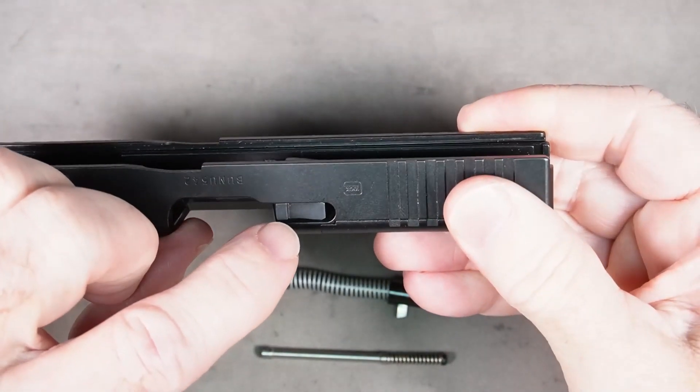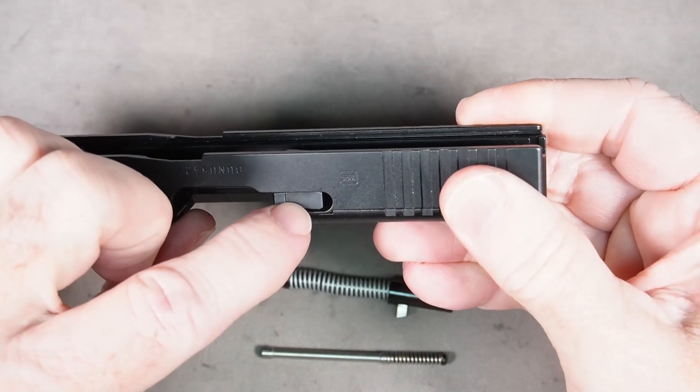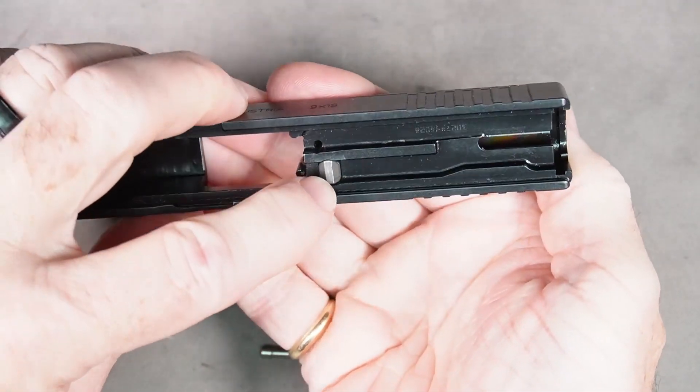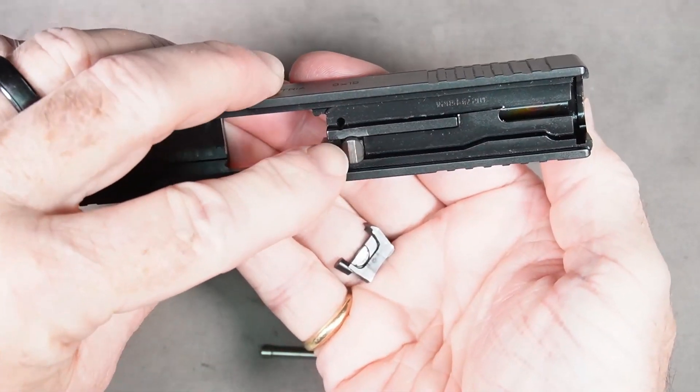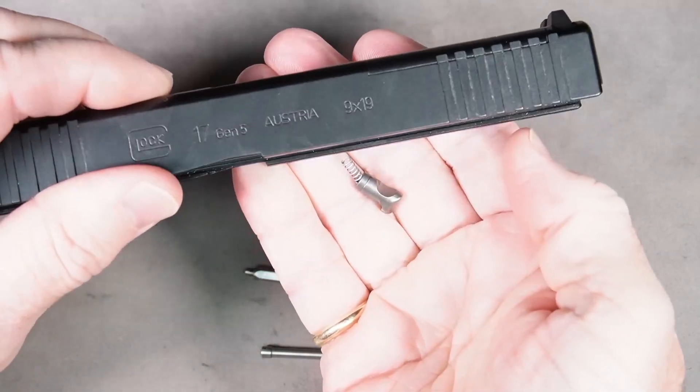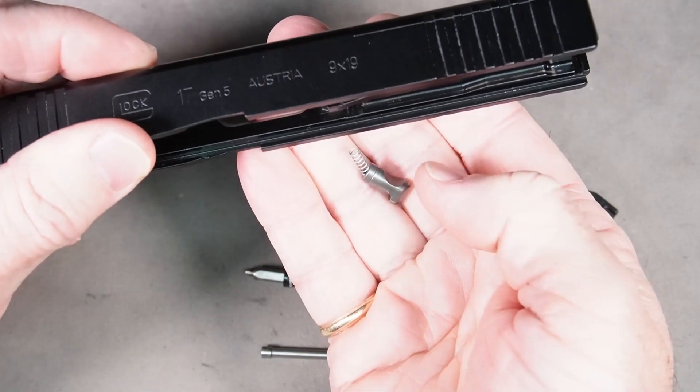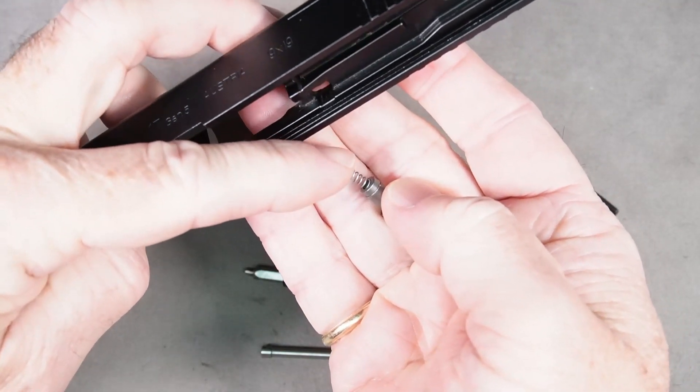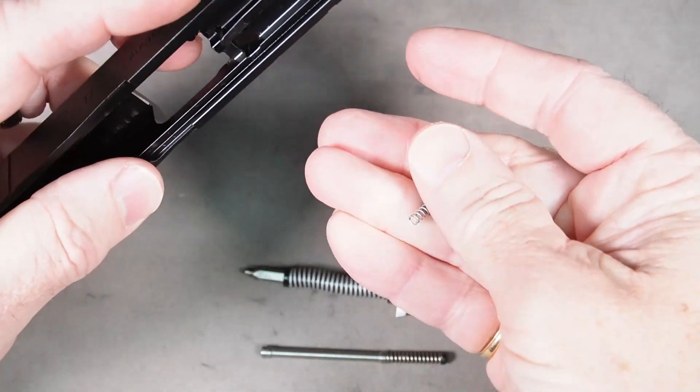Next we want to remove the extractor right here. So all you need to do, put your hand under it and press on the firing pin safety plunger, and the extractor will drop right out. And then when you turn the slide upside down, the firing pin safety plunger will fall out, and the spring that goes on that will also possibly fall out.